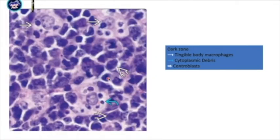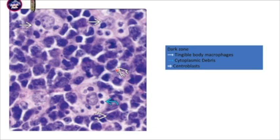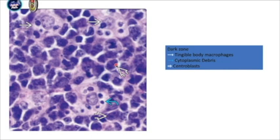If you look at the higher magnification, in the dark zone you have centroblasts — the lymphocyte is a bit larger and you can see there's a nucleolus. For centroblasts, the nucleolus is at the peripheral area. And usually if the nucleolus is in the center, it is called an immunoblast.